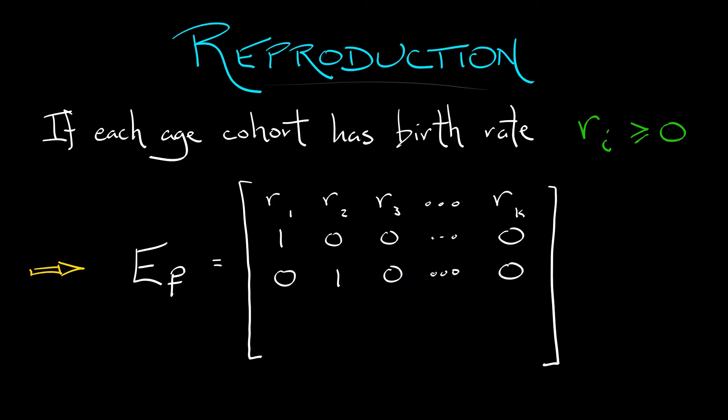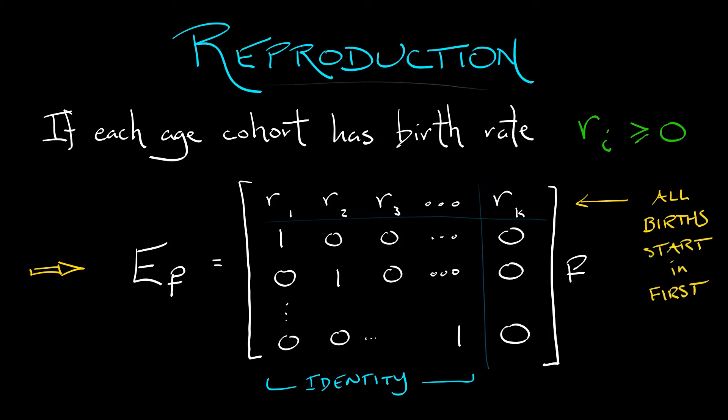Now, what this really means is that all of the births being in that first row, they start off in the first age cohort. Think about that. You might have to write this out in terms of components to see that that really does work.